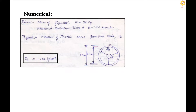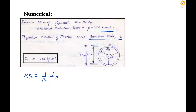The next problem involves a flywheel pivoted at its rim. The mass is given, and when disturbed, the time period of oscillation is measured as 1.22 seconds. We are required to find the mass moment of inertia about the geometric (centre of gravity) axis. The KE is half times I_O into θ̇ squared.